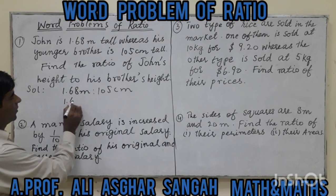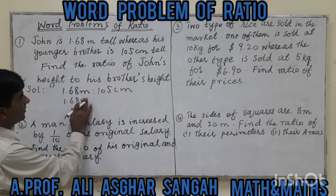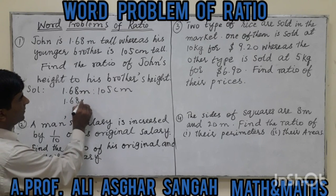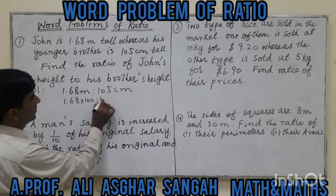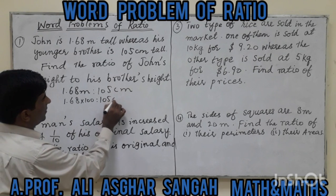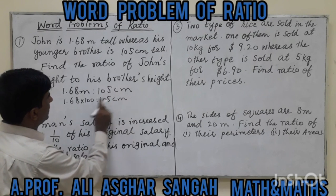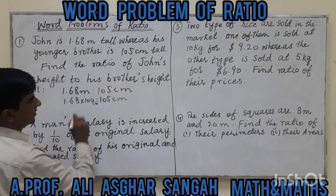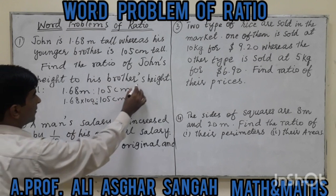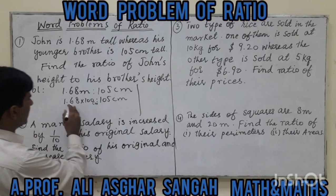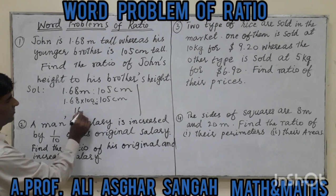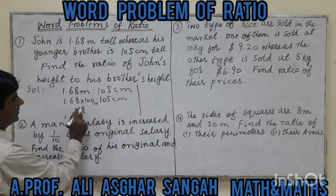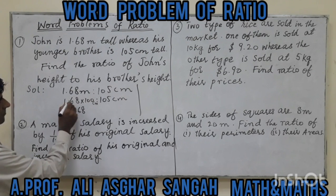We take 1.68 meters and multiply by 100 to convert to centimeters, which gives us 168 centimeters. So John's height becomes 168 centimeters.